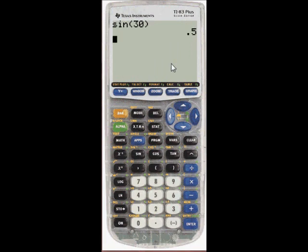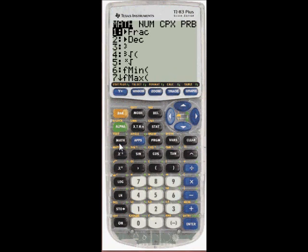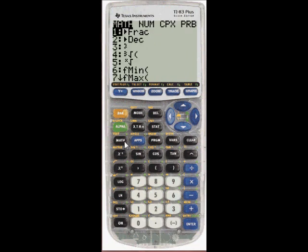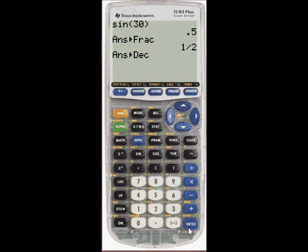But I might want it as a fraction as well. I can get that by going back to math. And the first option is fraction. Press enter, and it gives me as a fraction, 1 half. I want to go back to 0.5. I can go to math and choose option 2, which is to change back to decimal.